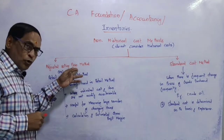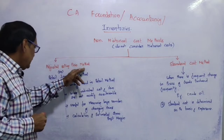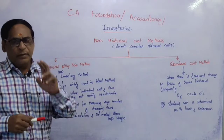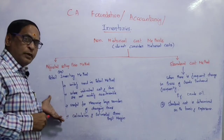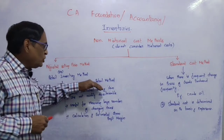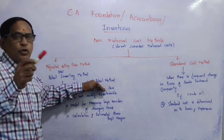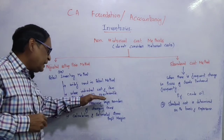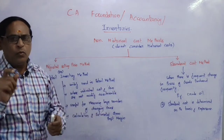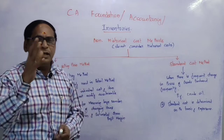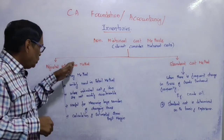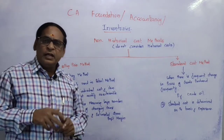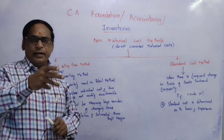This is the Adjusted Selling Price Method, also called the Retail Inventory Method. It is widely used in retail shops — wholesale and retail — where the individual cost of items are not readily ascertainable, meaning one cost is not available to us. It is useful for measuring a large number of changing items.